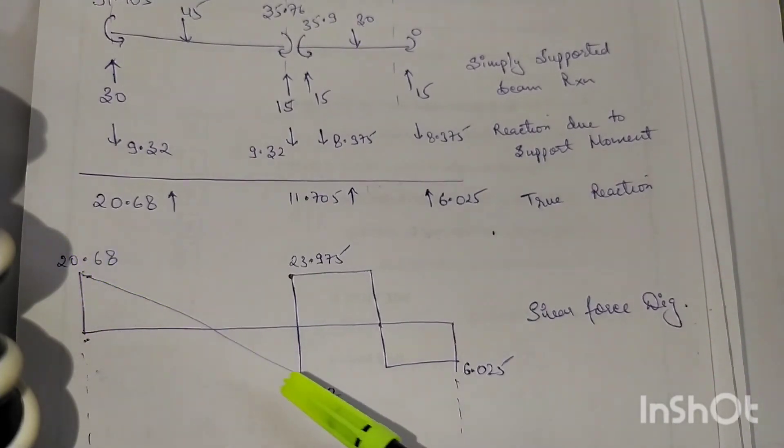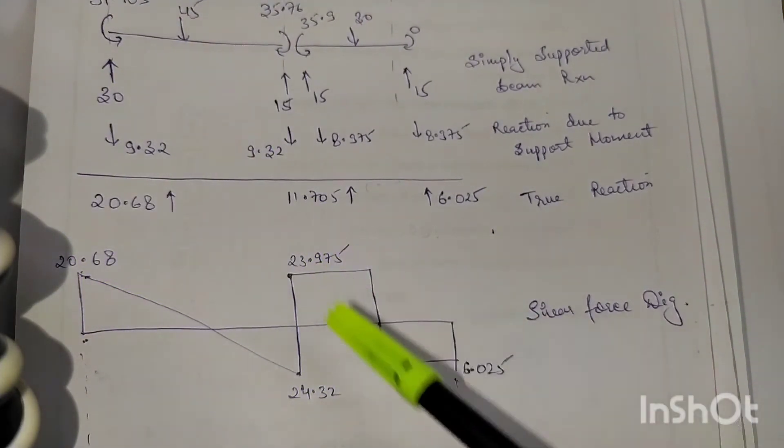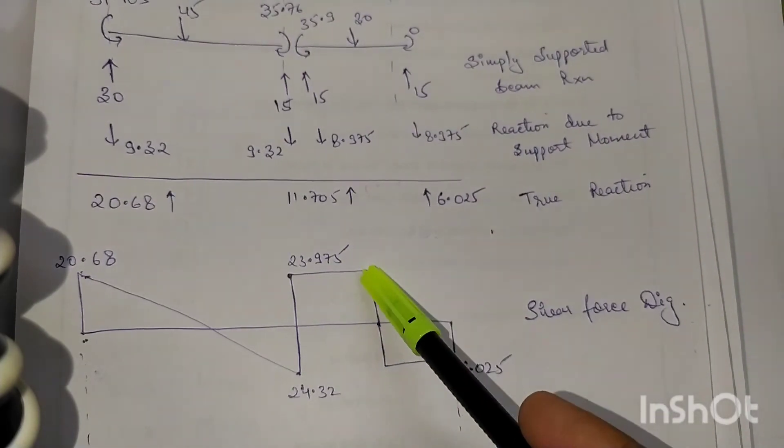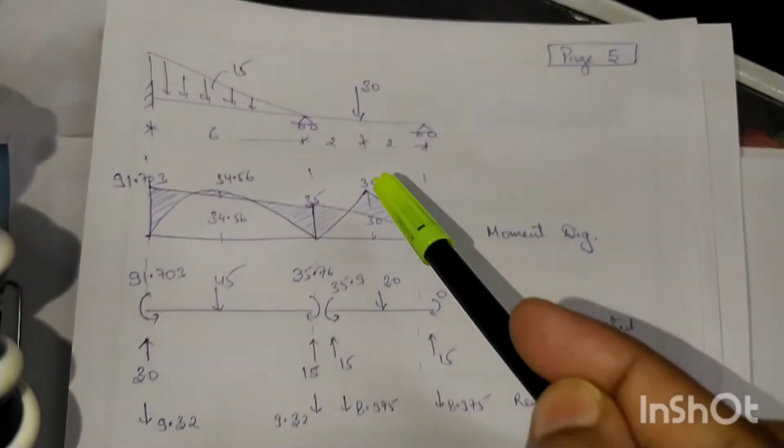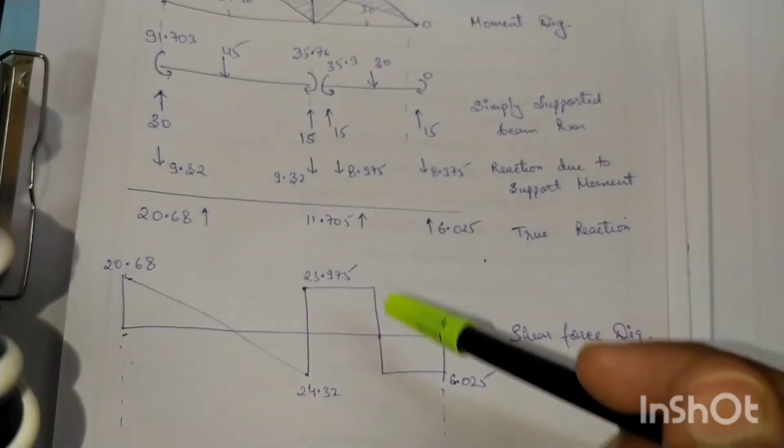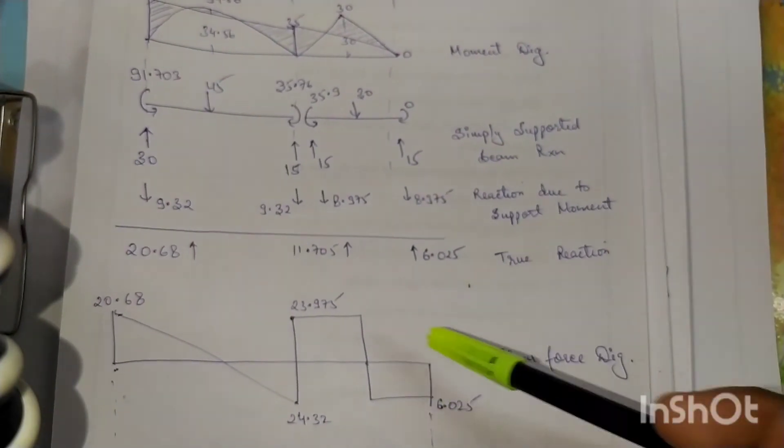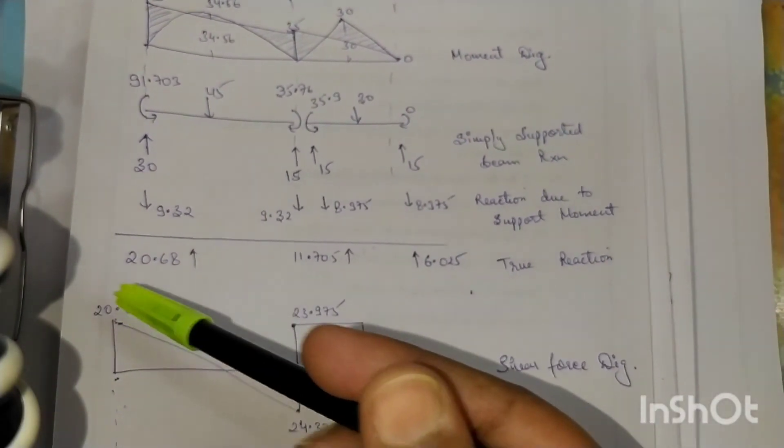What shear forces we are getting, we have just simply traced to be sure that the ordinates what we are getting should be matching with the forces. Like, see, 30 is matching here, and all the reactions at the support should also be matching with the ordinates what we are getting in the shear force diagram.